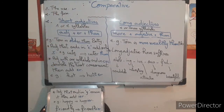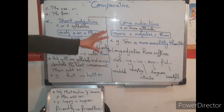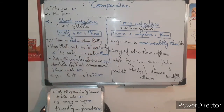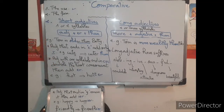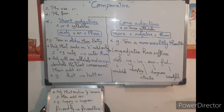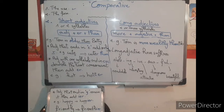To summarize the forms: for long adjectives, there are not many spelling rules. Simply put 'more' before the adjective and 'than' after it — we add nothing to the adjective itself. We keep it as it is, add 'more' before it, and add 'than' after it.